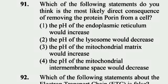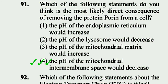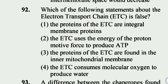Question 91: Which of the following statements do you think is the most likely direct consequence of removing proton pores from a cell? The pH of the mitochondrial intermembrane space would decrease. Option 4 is right.